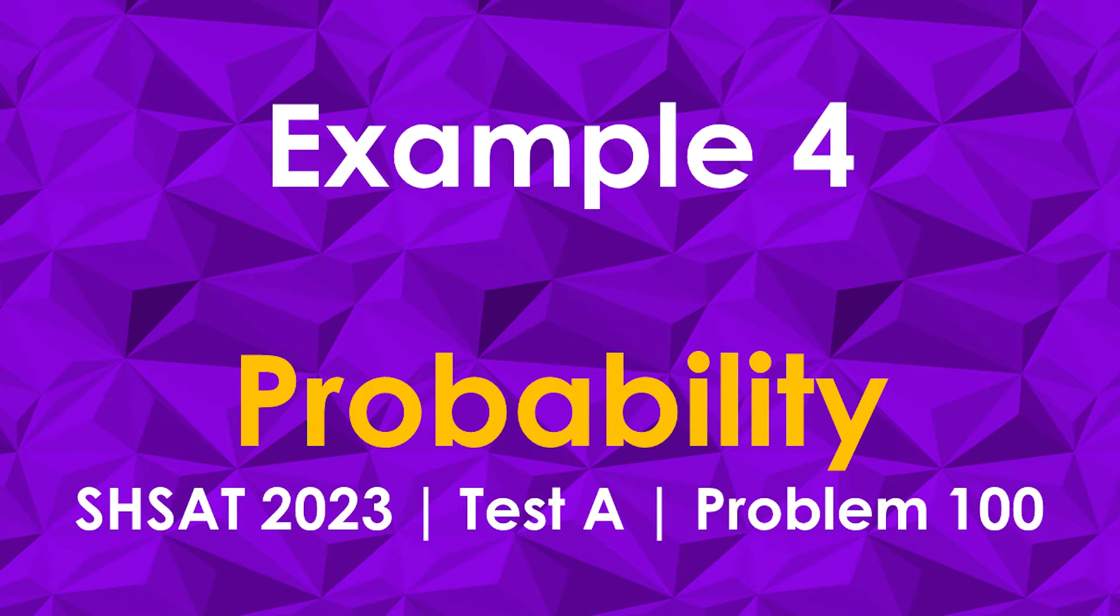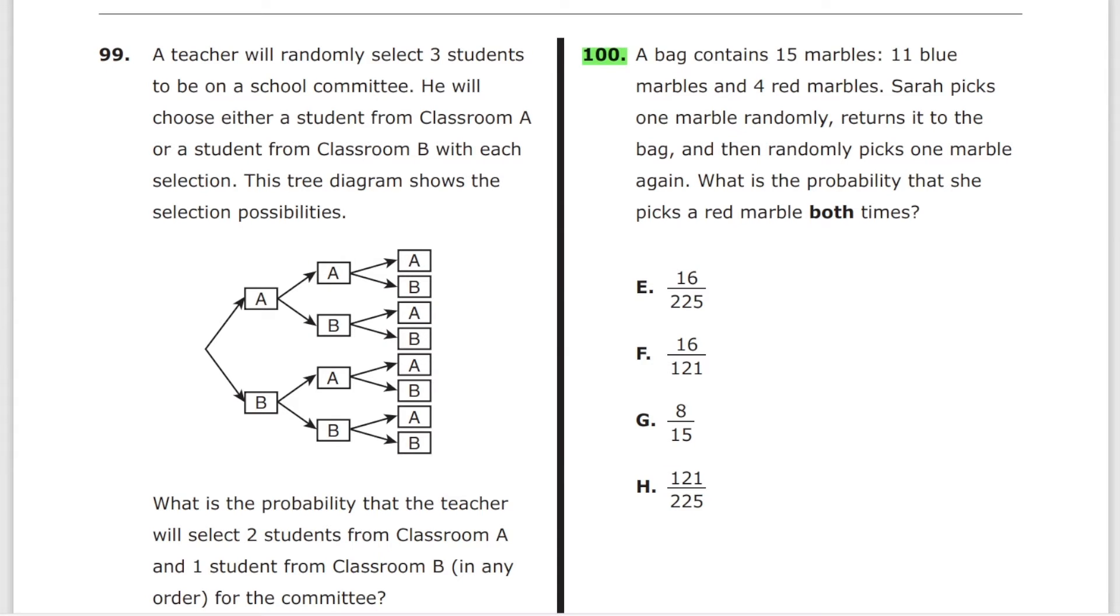Problem number 100. By the way, this is the fourth problem in a row on probability, just to emphasize how important the topic of probability is. A bag contains 15 marbles, 11 blue marbles, and four red marbles. Sarah picks one marble randomly, returns it to the bag, and then randomly picks one marble again. What is the probability that she picks a red marble both times? What's the probability that she'll select the first marble as red? That's four red divided by total, which is 15.